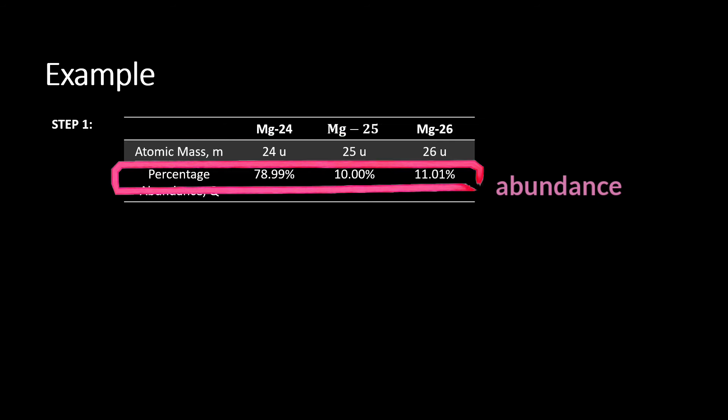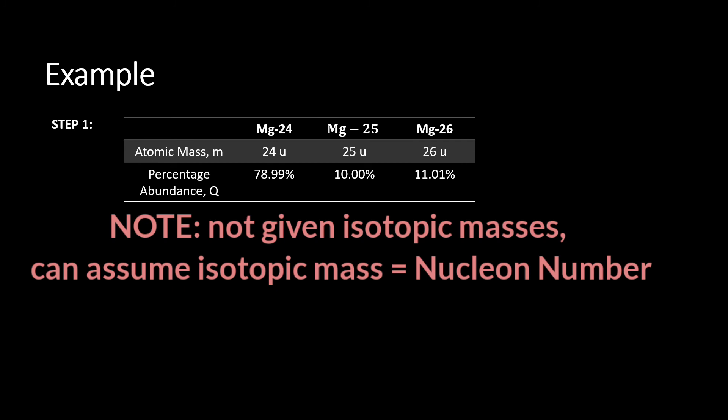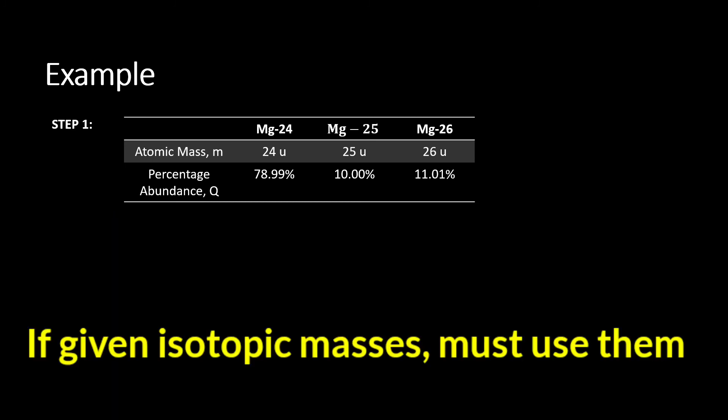For this example, we are not being given the isotopic mass of each isotope of magnesium. So if you are not being given the isotopic mass for each isotope, then you can assume the isotopic mass of each isotope is equal to the nucleon number. Must remember, you can only assume this when you are not being given the isotopic mass of each isotope. But if you are being given, then you must use the exact mass for each of the isotopes.